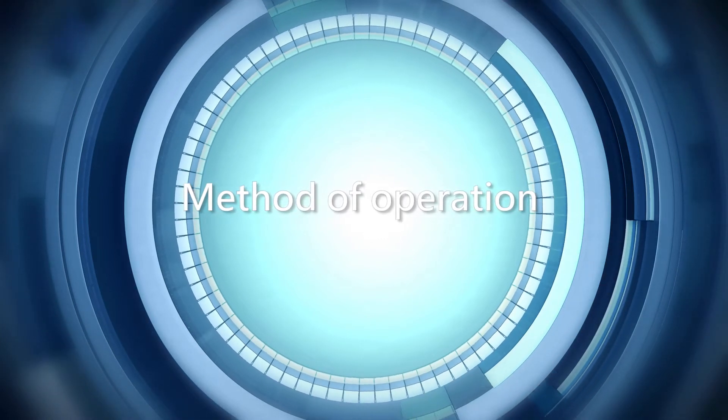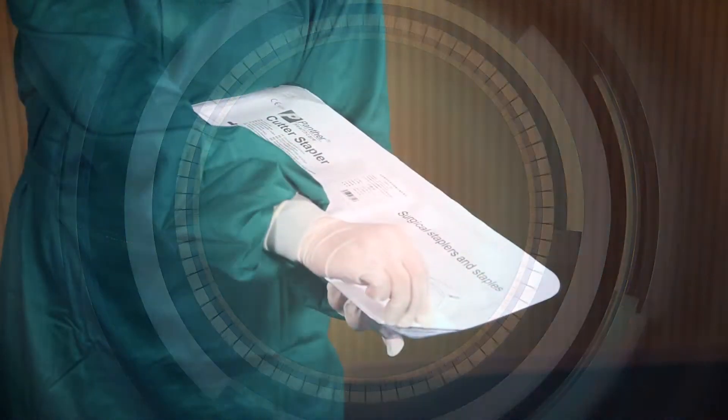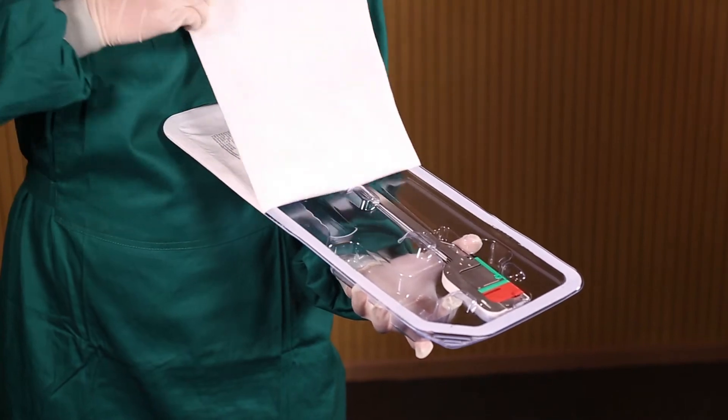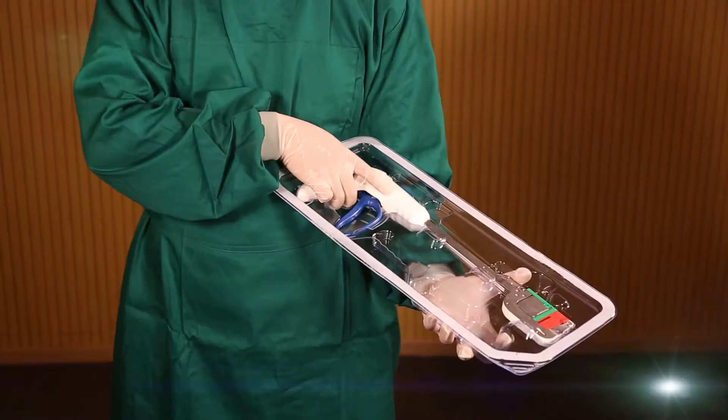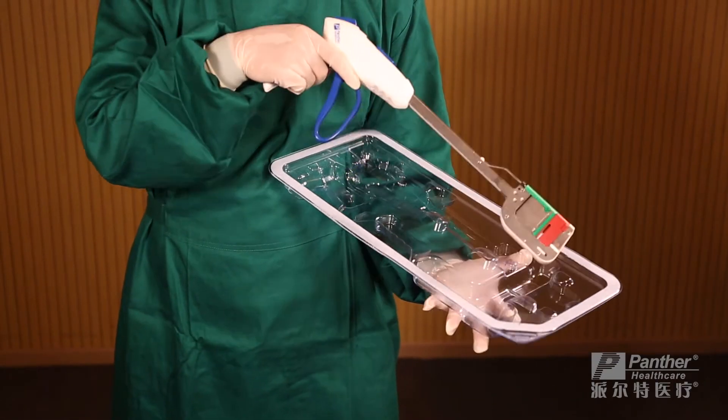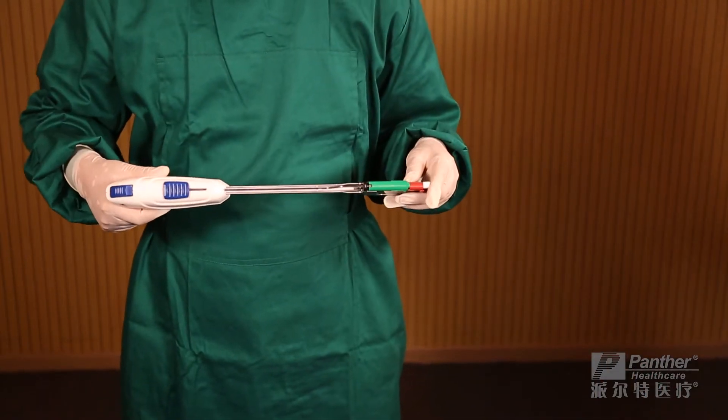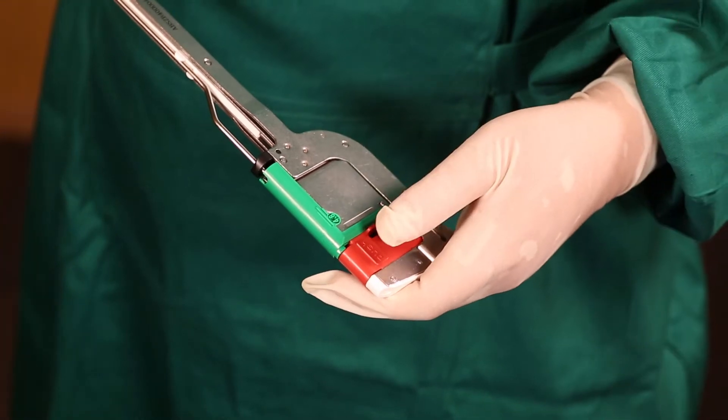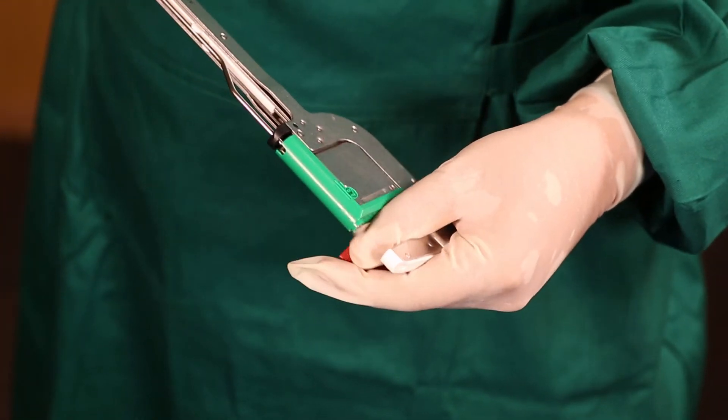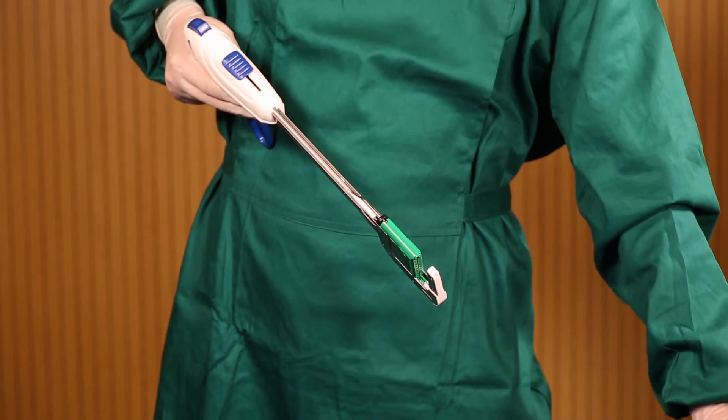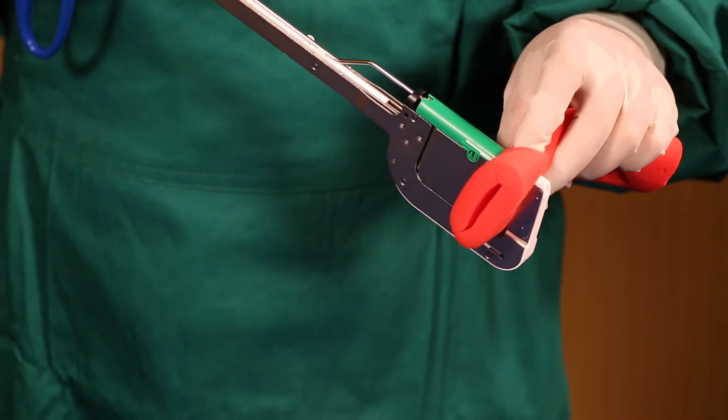Method of operation: Remove the red protector by pressing the thumb on the push. Place tissue between the jaws.